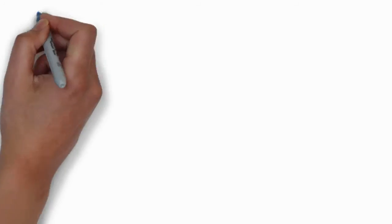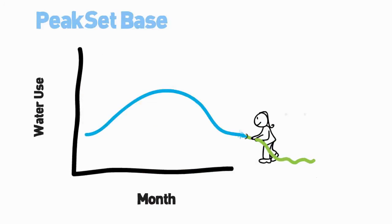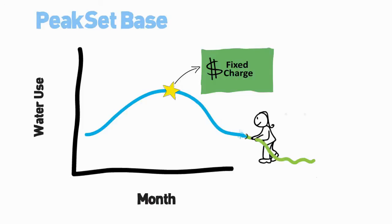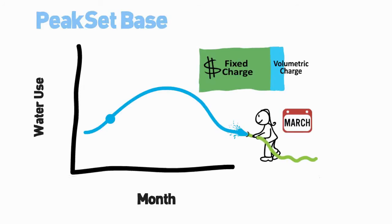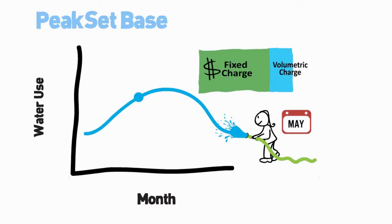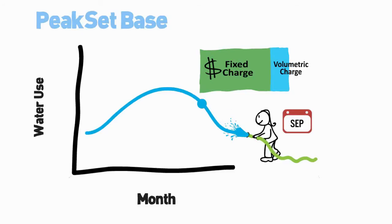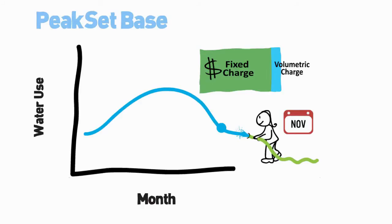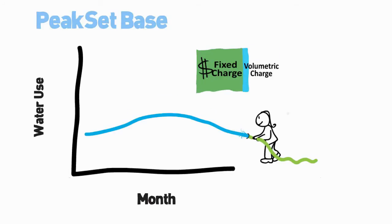The first of these models is called Peak Set Base, because it uses an individual customer's peak demand to calculate a base charge. Under this model, the utility applies a rate against an individual customer's highest monthly water use to calculate an individual fixed monthly charge for the next year. The utility would still charge a volumetric charge every month, but it would make up a much smaller portion of a customer's bill and, subsequently, a utility's revenue. A utility using this model would be able to collect more revenue from a customer's fixed charge, making the annual budgeting process much more predictable, while still sending a price signal to customers to use less water. In fact, under the Peak Set Base model, customers are incentivized to levelize their water use, which for some utilities can drive significant savings in the long term.